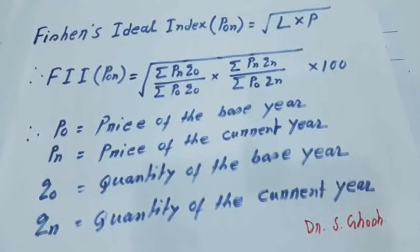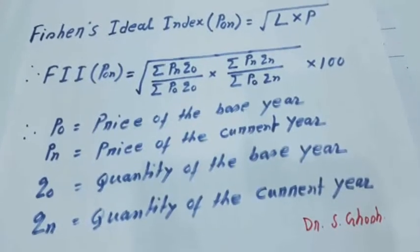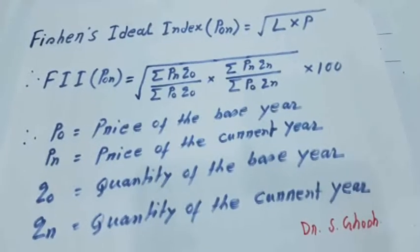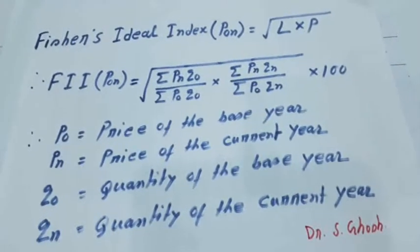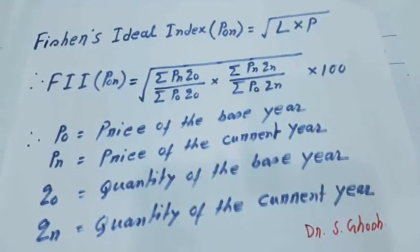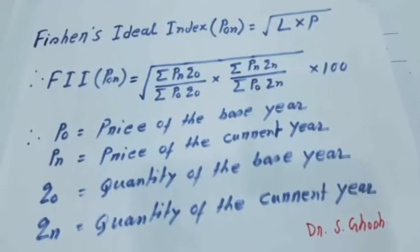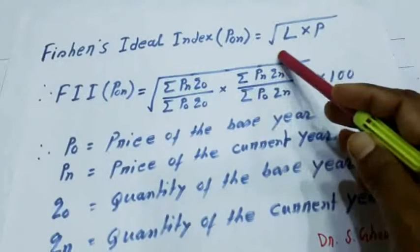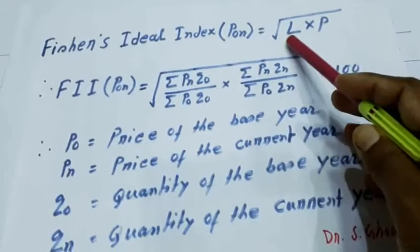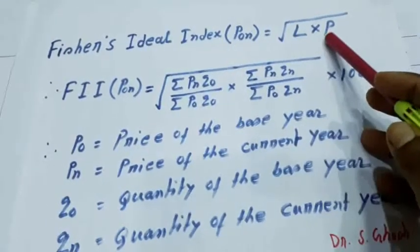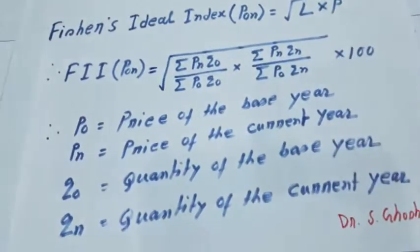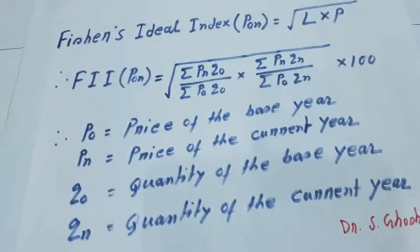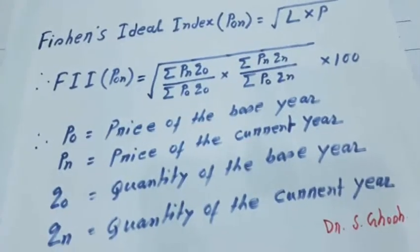Economist Fisher suggested that if we take the geometric mean of the Laspeyres price index and Paasche price index, that result will be the ideal index number.